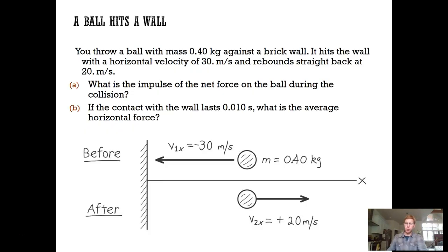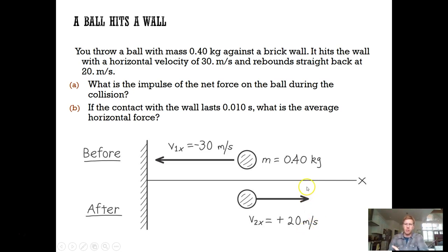Here's an example problem. A 0.4 kg ball — probably something like a soccer ball — is kicked at a wall at 30 m/s, hits it, and bounces straight back at 20 m/s. Based on that, find the impulse on the ball during the collision. And if the collision takes 10 milliseconds, what is the average force on the ball during the collision?